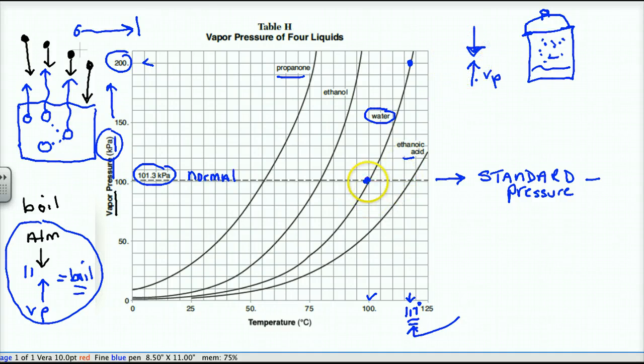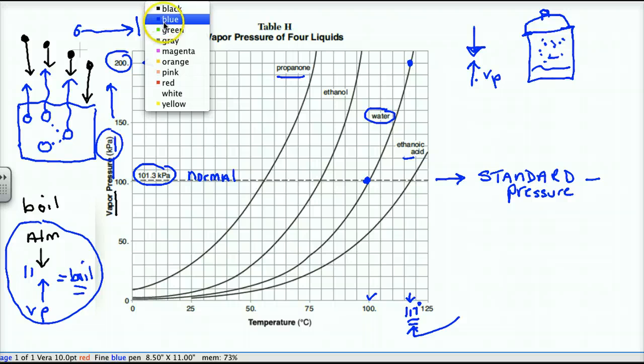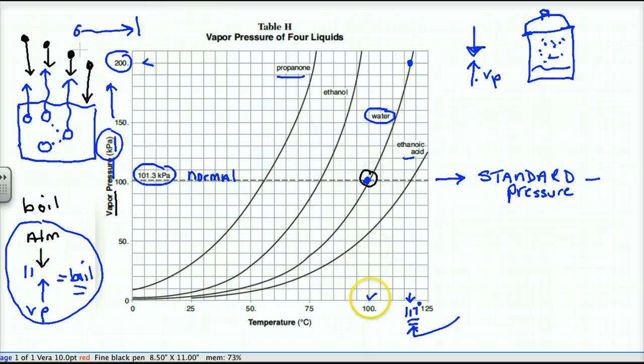So if it boils normally at 100, if it normally boils at 100, with higher temperature you create more vapor pressure, and that should make sense to you. Higher the temperature equals a greater amount of vapor pressure. The more energy that you give molecules, the more they can overcome each other and increase their vapor pressure.